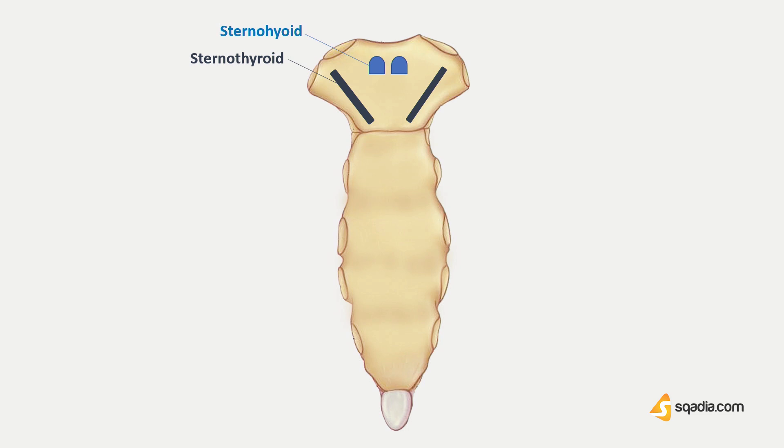Some of the relations that you have to remember include the arch of aorta, which is related to the lower half of the manubrium. The left brachiocephalic vein,